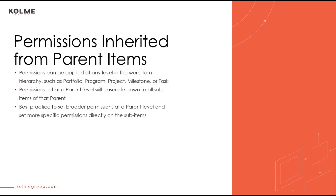Another factor to keep in mind is inherited permissions. These permissions are set at a parent item like a portfolio, program, or parent project, and cascade down to all projects and sub-projects contained within. This is useful if you have user groups that will always need to view any project in a particular portfolio. However, if a user group only needs to view projects of a particular project type, it would be best to write a configuration that applies permissions based on that project type. There is no way to prevent these permissions from cascading down, so best practice is to set broad permissions at a higher level and more specific permissions further down in the work item hierarchy.